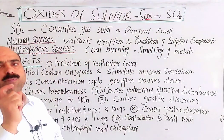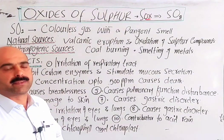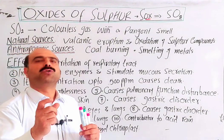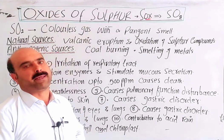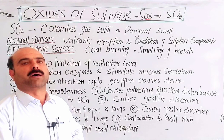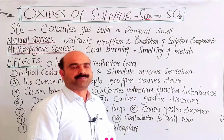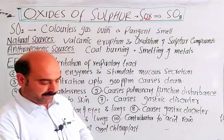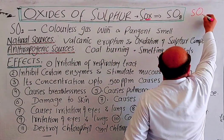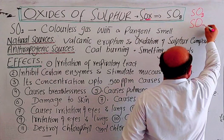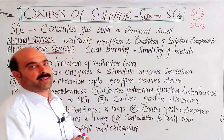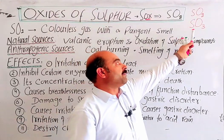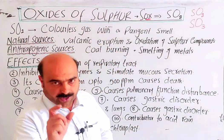There are two main Oxides of Sulphur. Binary compounds of Oxygen are called Oxides. Compounds made up of two elements only are called binary compounds. Binary compounds of Sulphur and Oxygen are called Oxides of Sulphur. There are two main types: the first one is Sulphur Dioxide (SO2) and the second one is Sulphur Trioxide (SO3). In SO2 there are two oxygen atoms, and in SO3 there are three oxygen atoms.